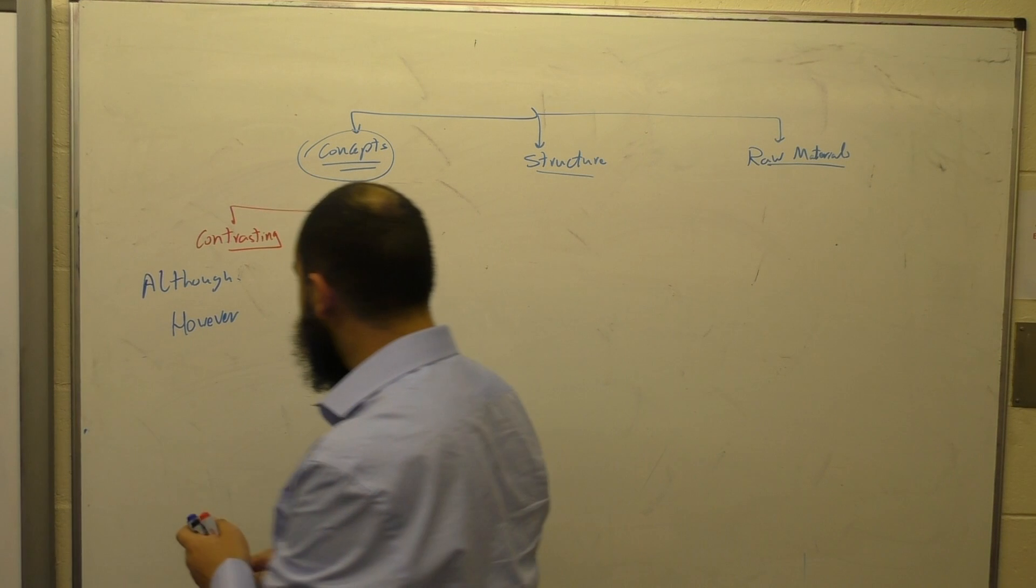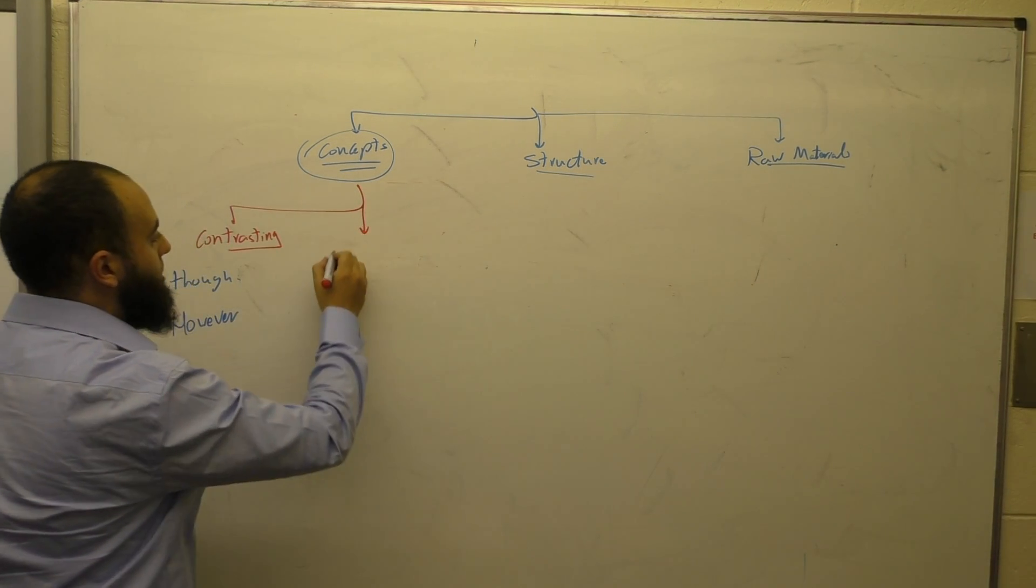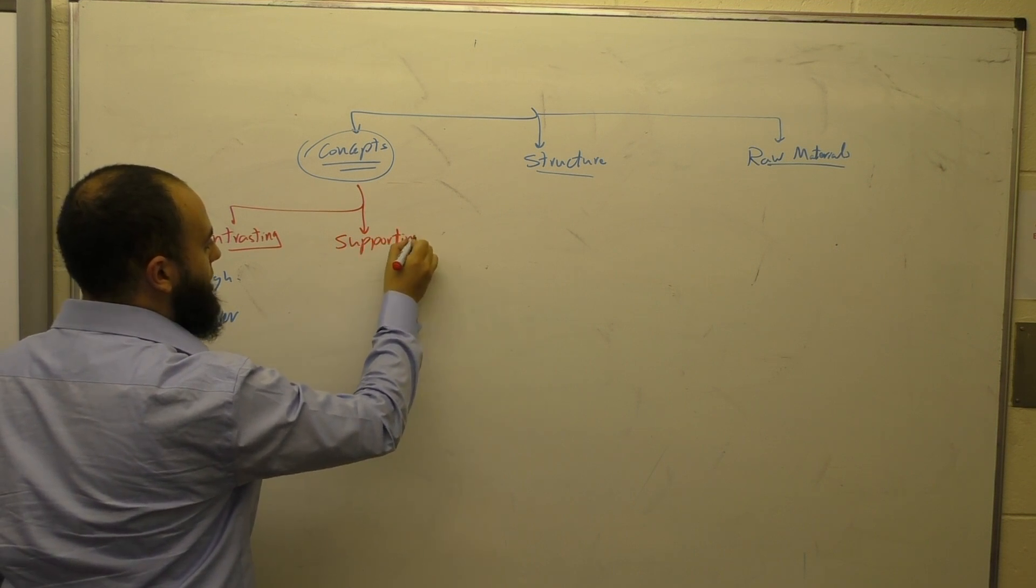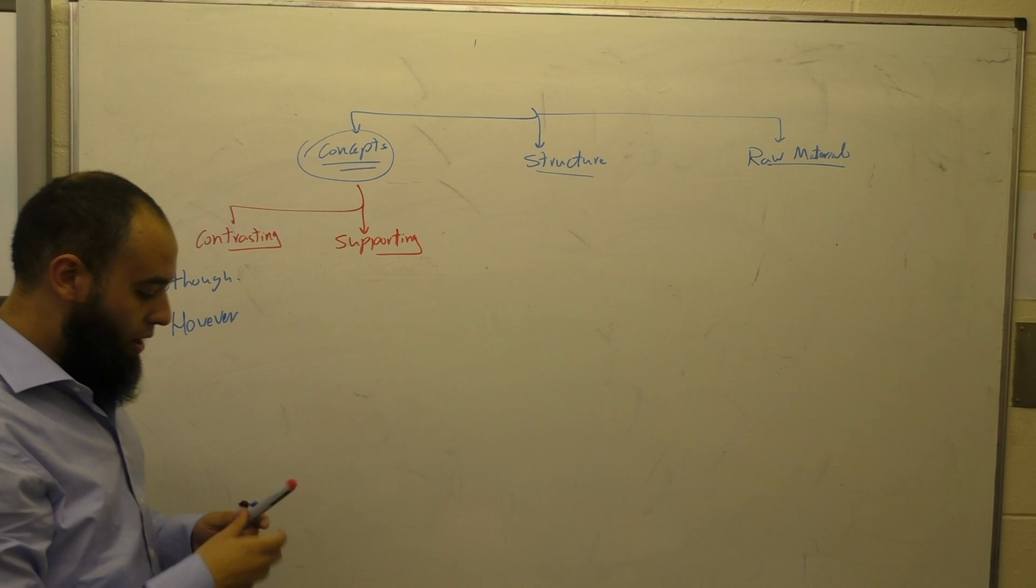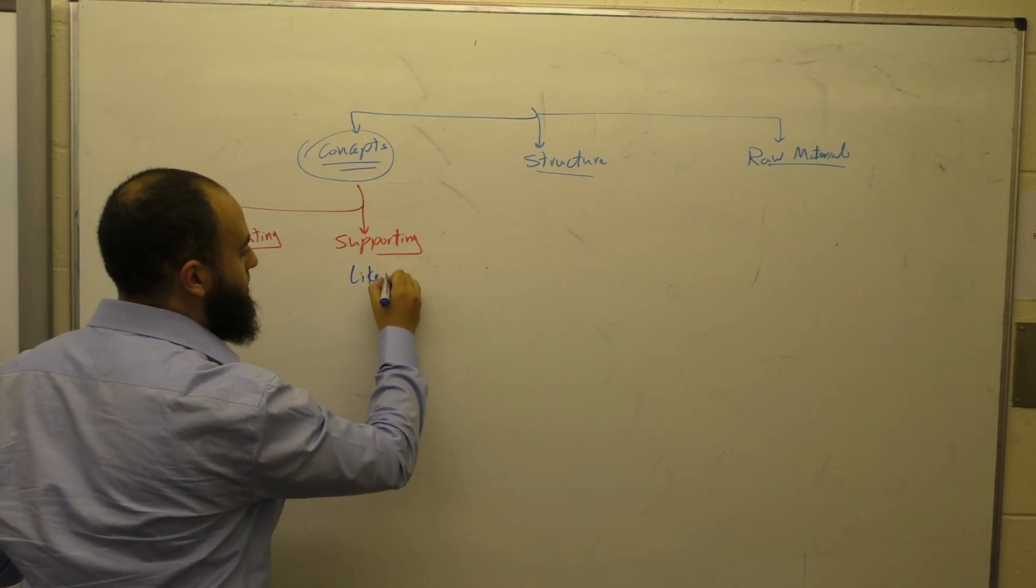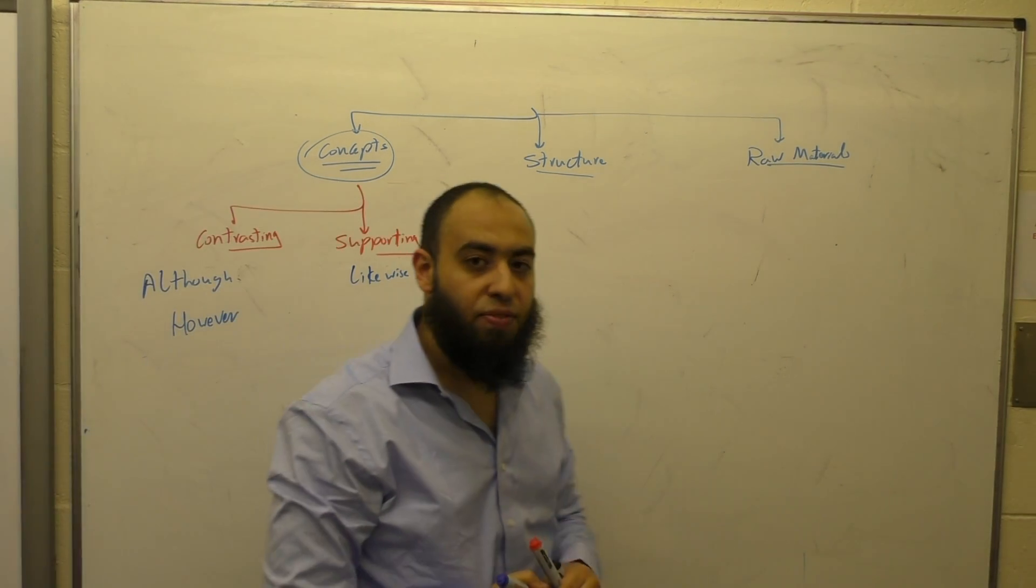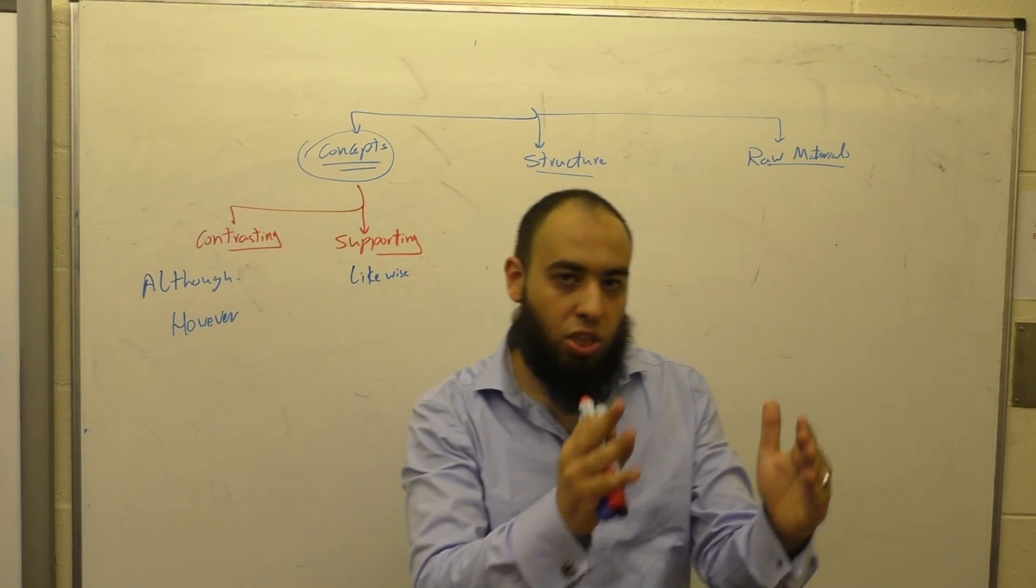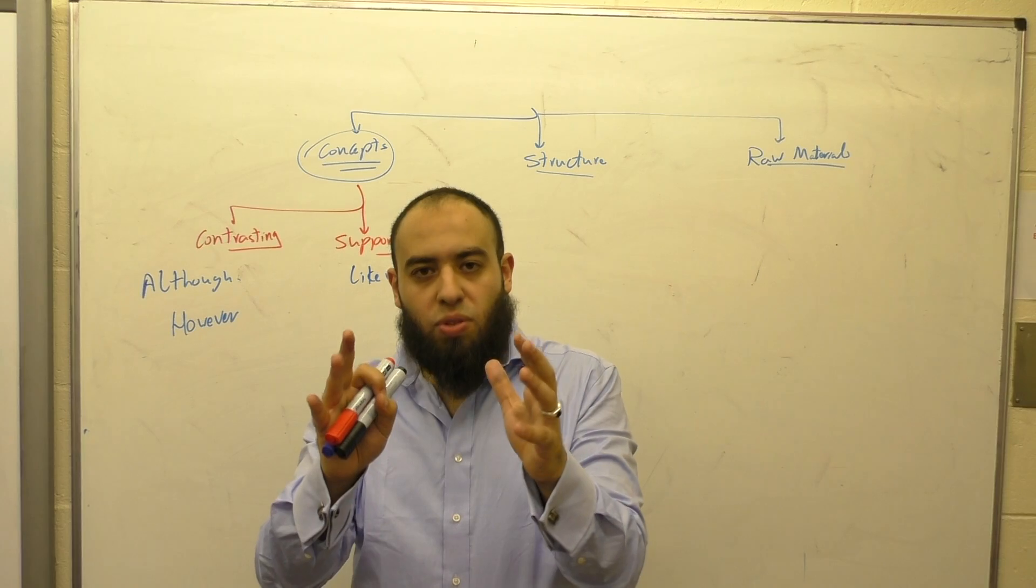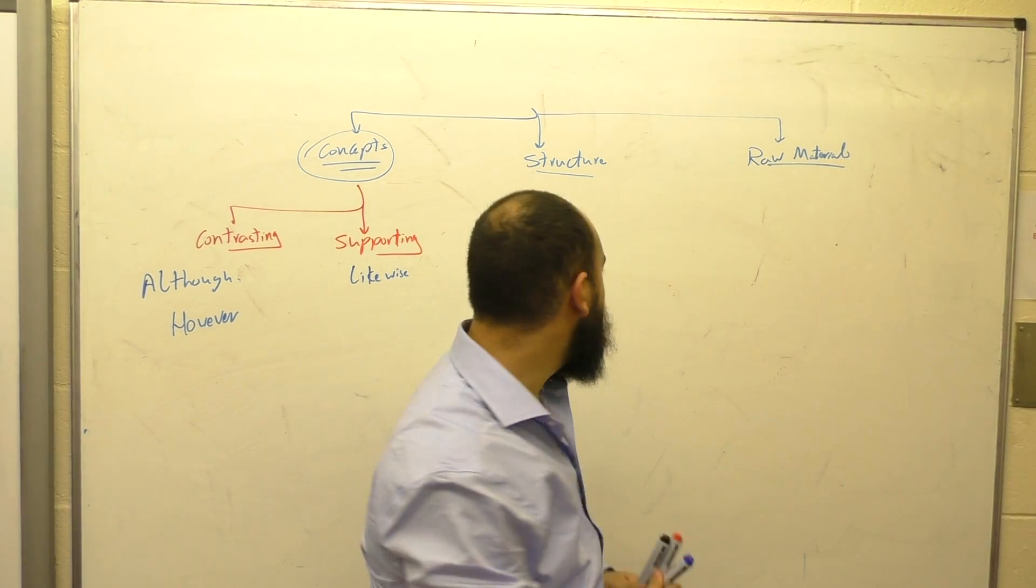The second kind of concept is supporting concepts. Supporting like what? Supporting like 'likewise.' As we explained in the last lecture, likewise is a very nice word. Why? Because you take the same logic in one situation and use it in another situation.